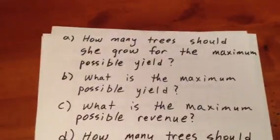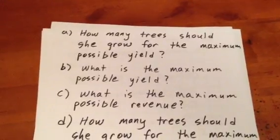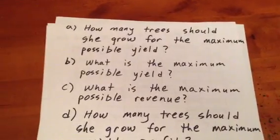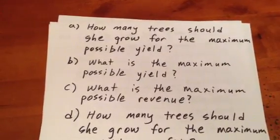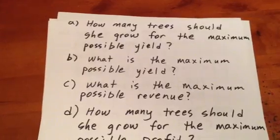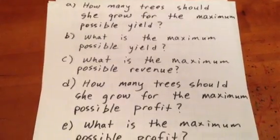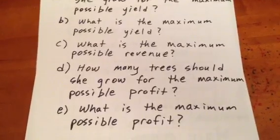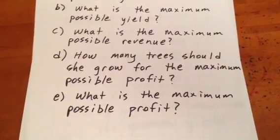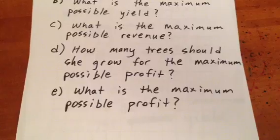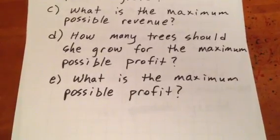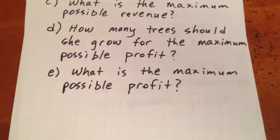We would like to know how many trees she should grow for the maximum possible yield, in other words, the most apples possible. We would also like to know what the maximum possible yield is, in other words, how many apples is it possible for her to grow. We want to know the maximum possible revenue. We want to know how many trees she should grow for the maximum possible profit. And as well, we want to know what the maximum possible profit is.